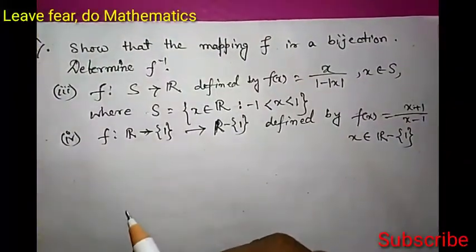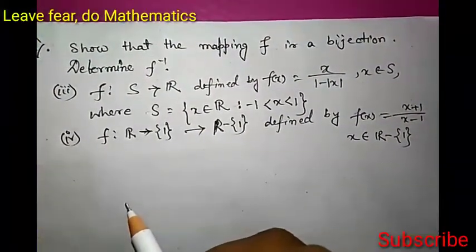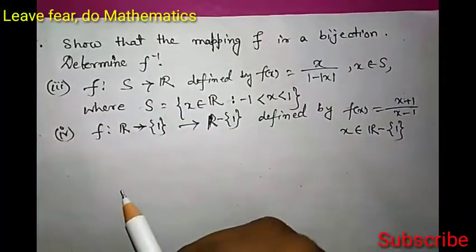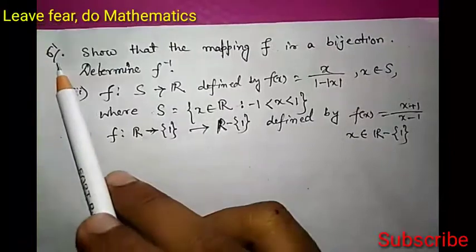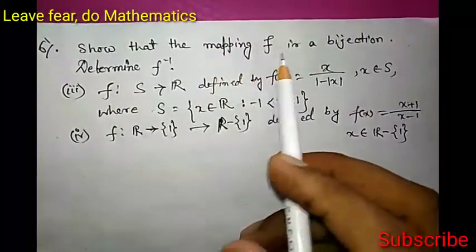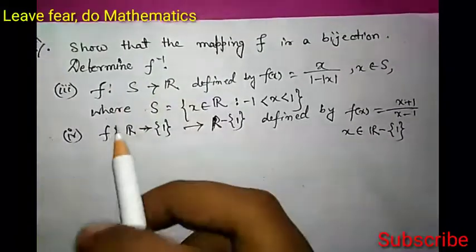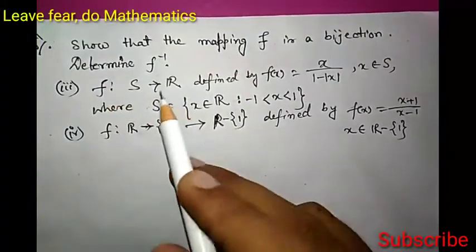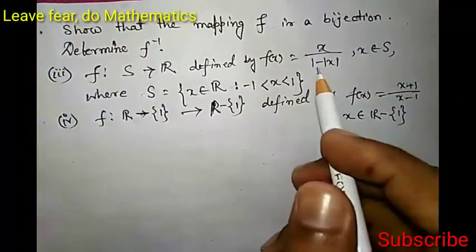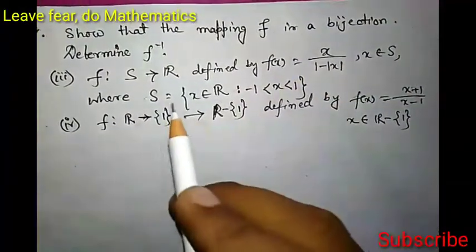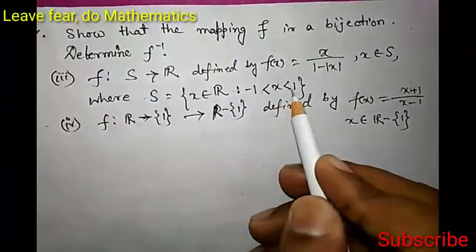Hello friends, welcome to LibFedio Mathematics. Today we are going to solve another problem from the Schema Page Higher Algebra book, Exercise 3, page number 49. This is question number 6: show that the mapping f is a bijection and determine f inverse. f is defined as a function from S to R such that f(x) = x over 1 minus mod x, where the set S is the open interval (-1, 1).